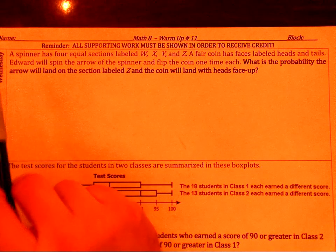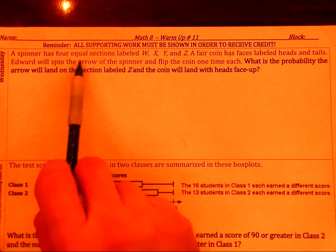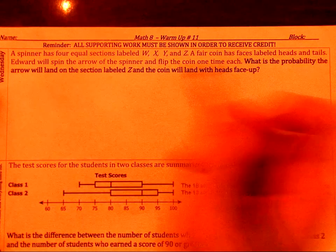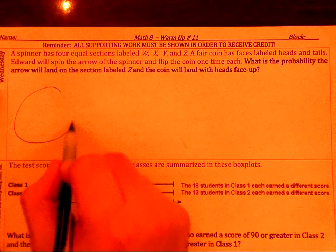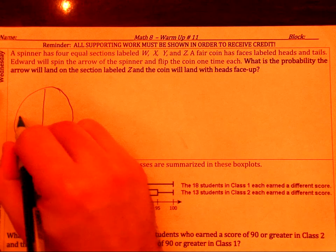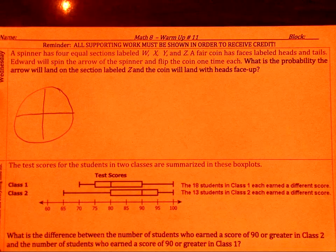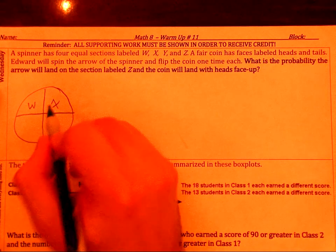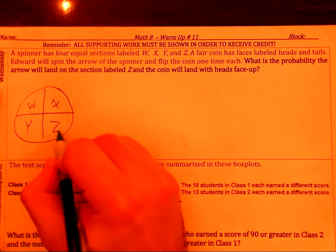And for Wednesday's warmup, it says a spinner has four equal sections labeled W, X, Y, and Z. And so if you want to draw that spinner, that's almost kind of like a pie chart. So you're making a nice little circle, and it has it labeled W, X, Y, and Z.